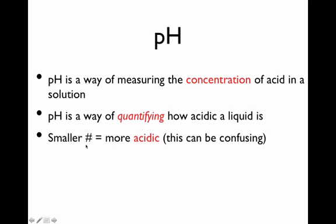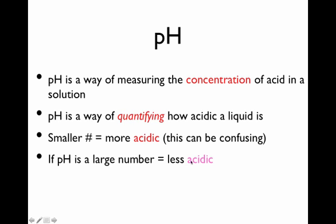The smaller the pH number, the more acidic the liquid is. This can be confusing because people usually assume a bigger number means more of something — but with pH, it's like golf: the smaller the number, the more acidic. The bigger the pH number, the less acidic — and less acidic means more basic. So the higher the pH, the more basic the solution.